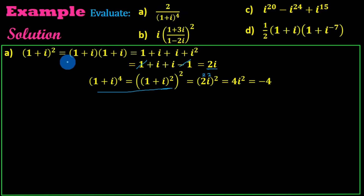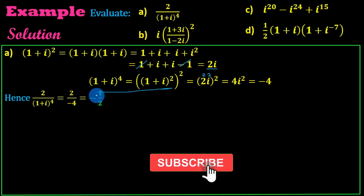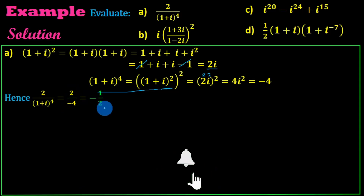This is the example: 1 plus i to the power of 4 gives minus 4. So 2 over minus 4 is equal to 2 over minus 4. Simplifying, that is 1 over 2, which equals minus one-half, or minus one-half plus 0i in a plus bi form.